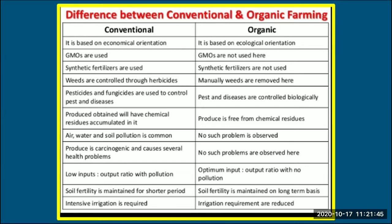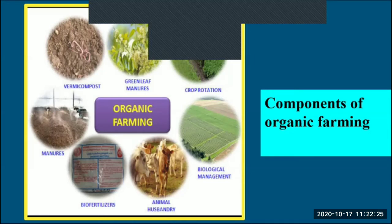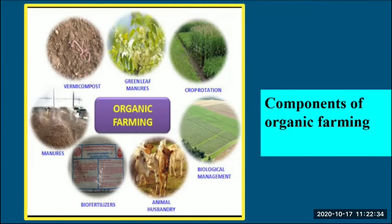Components of organic farming include: vermicompost, green leaf manures, crop rotation, biological management, animal husbandry, and bio-fertilizers. Green leaf manures are organic manures made from leaves collected from available resources, used to supply essential plant nutrients to the soil and increase soil fertility in a healthy manner, using all possible available leaves as the main source.